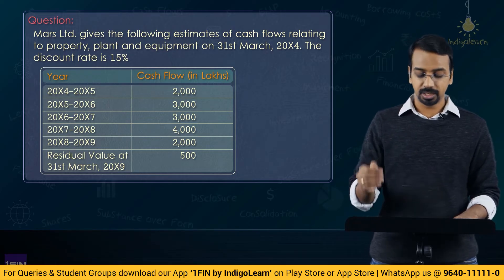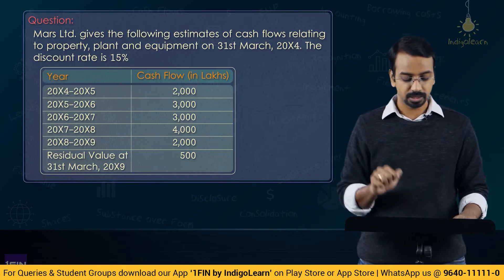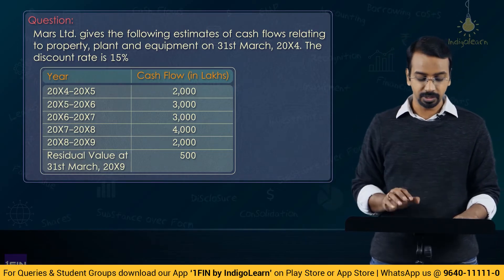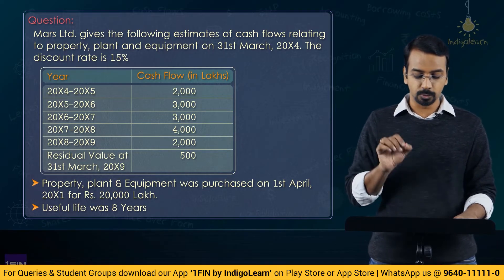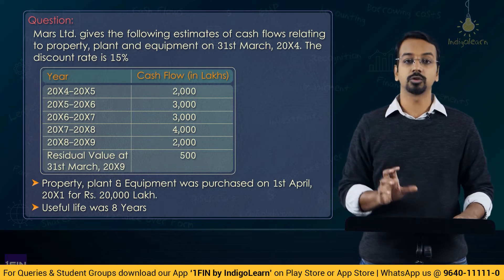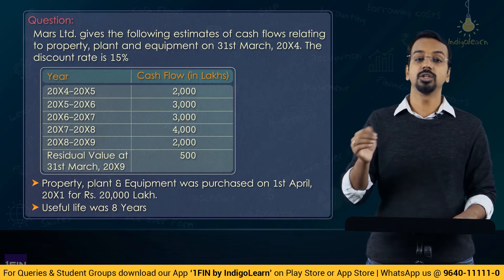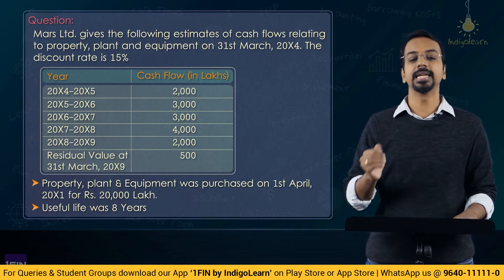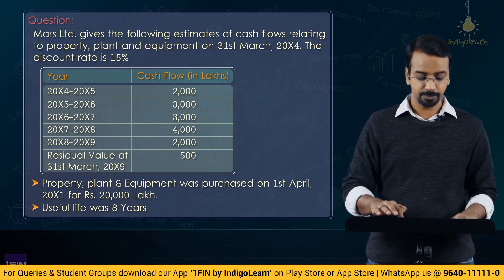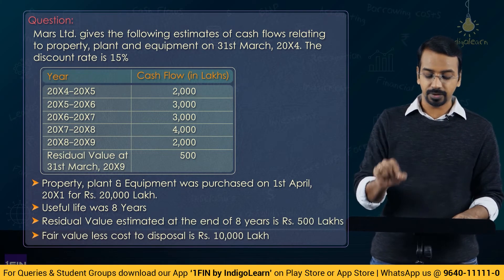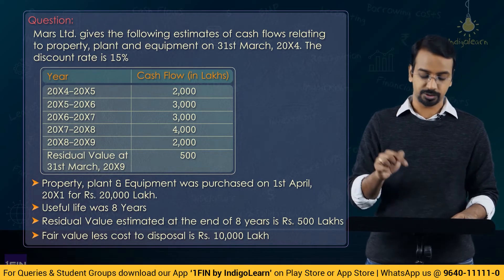The cash flows are: Year 5 — 2,000; Year 6 — 3,000; Year 7 — 3,000; Year 8 — 4,000; Year 9 — 2,500 (operating) plus residual value of 500. Property, plant and equipment was purchased for 20,000 lakhs on 1st April Year 1, with an estimated useful life of 8 years and a residual value of 500 lakhs at the end of 8 years. Fair value less cost of disposal is given as 10,000 lakhs.